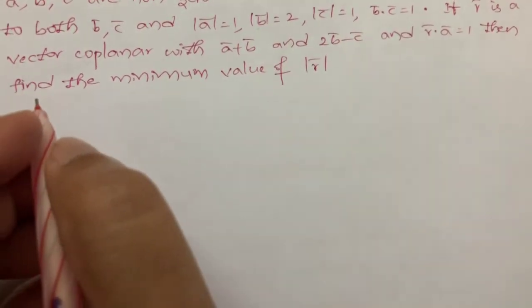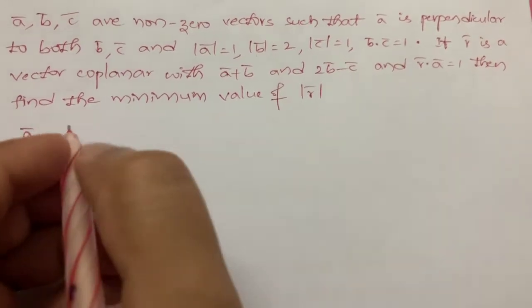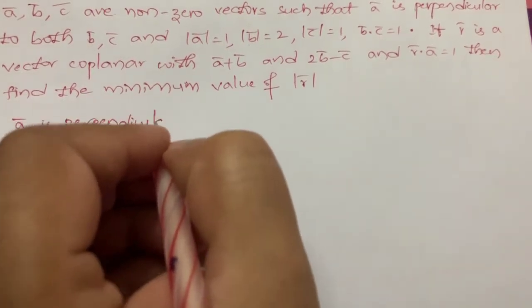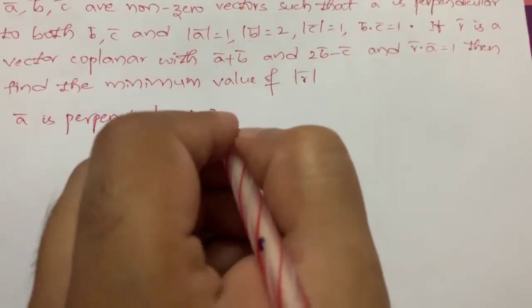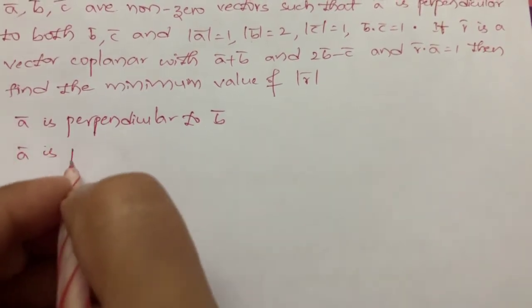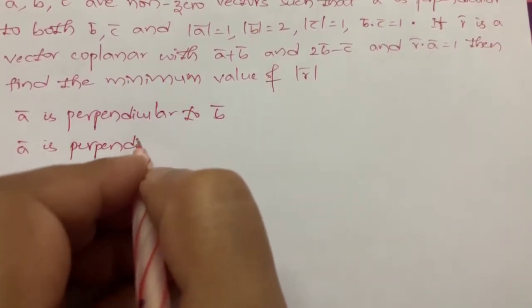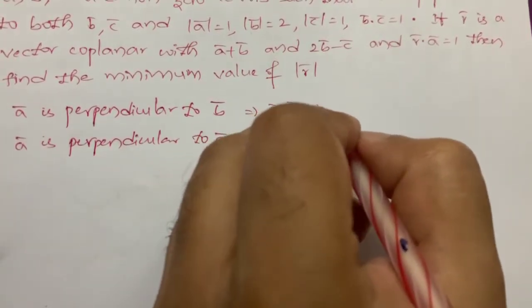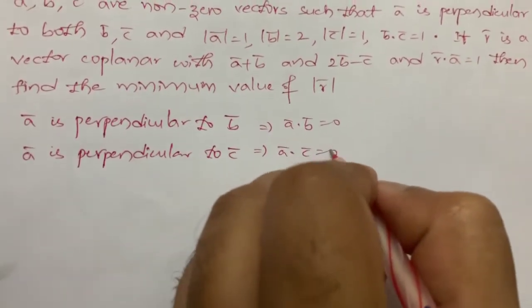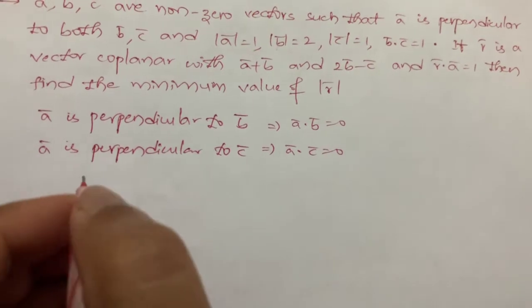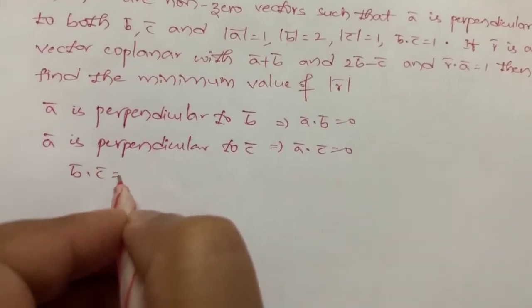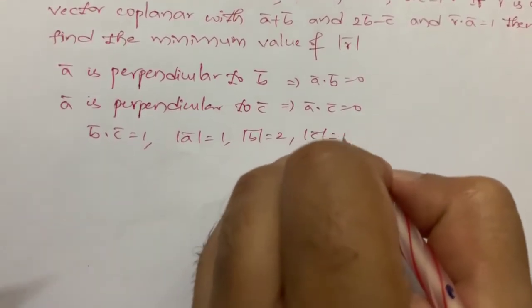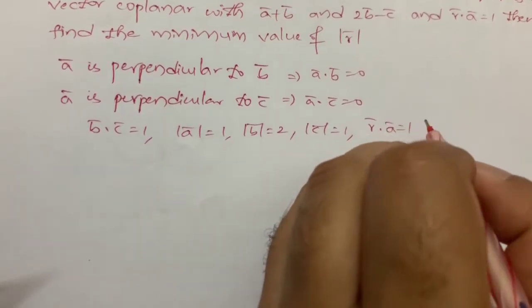So here what is given? a bar is perpendicular to both b bar and c bar. So this implies a bar dot b bar is equal to 0, and a bar dot c bar equal to 0. Given: b dot c equal to 1, magnitude of a bar is 1, magnitude of b bar is 2, magnitude of c bar is 1, and r bar dot a bar is 1.